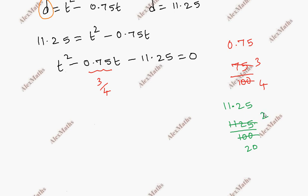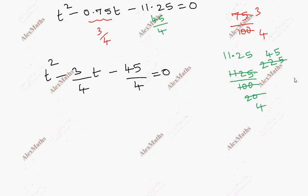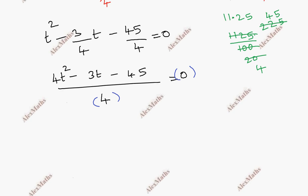So 11.25 becomes 45 by 4. The equation is now t squared minus 3 by 4 times t minus 45 by 4 equal to 0. The LCM is 4, so multiplying through by 4 gives us 4t squared minus 3t minus 45 equal to 0.